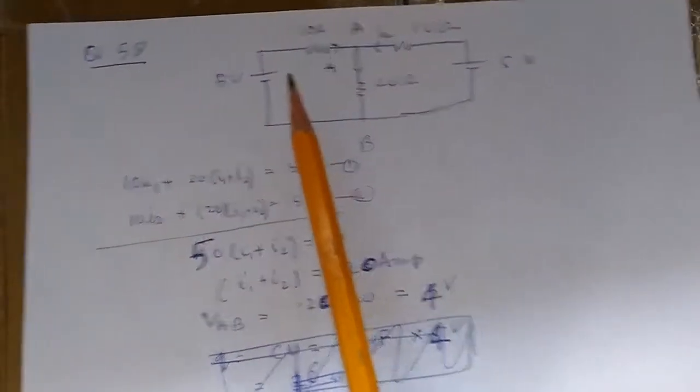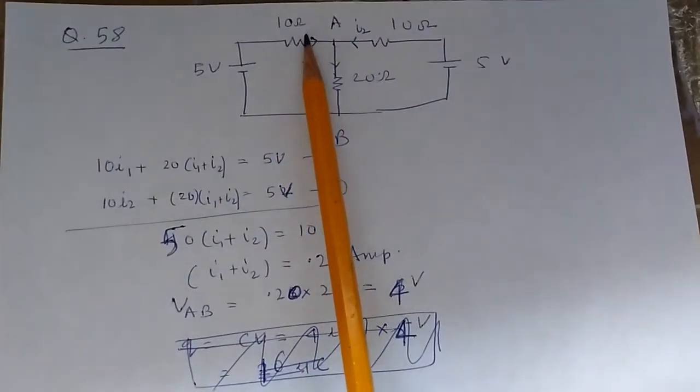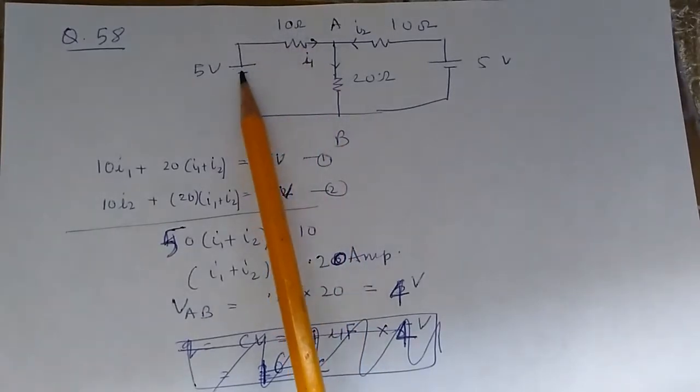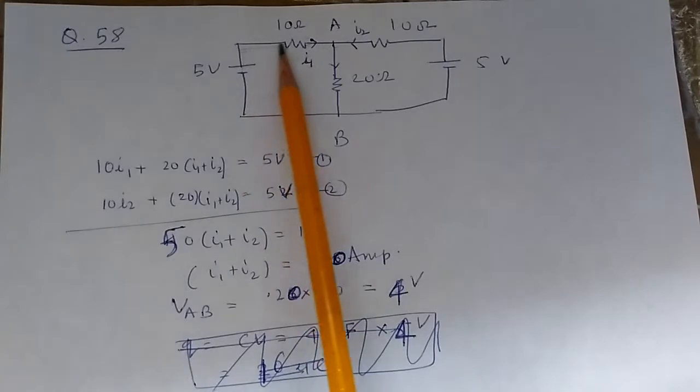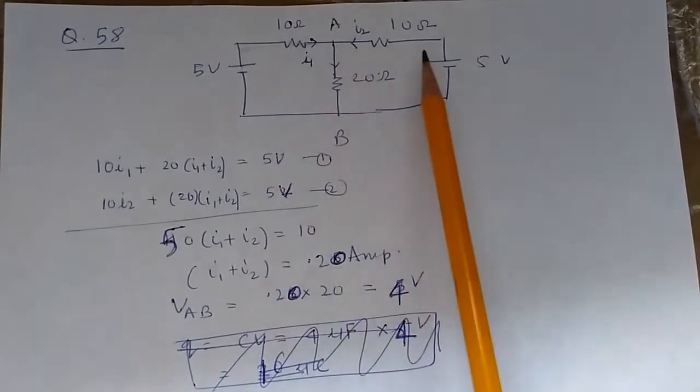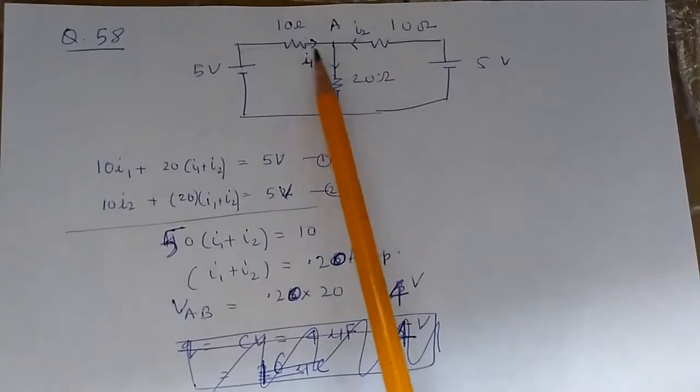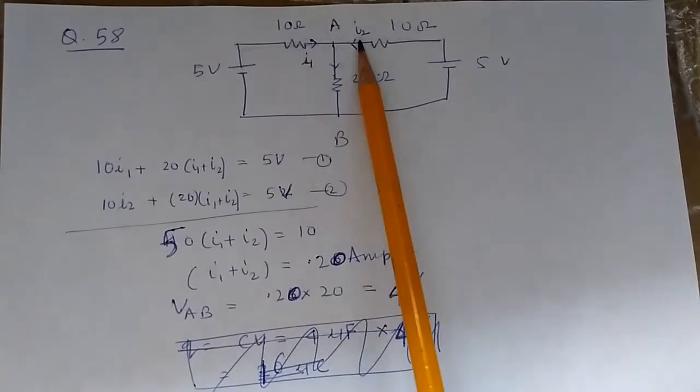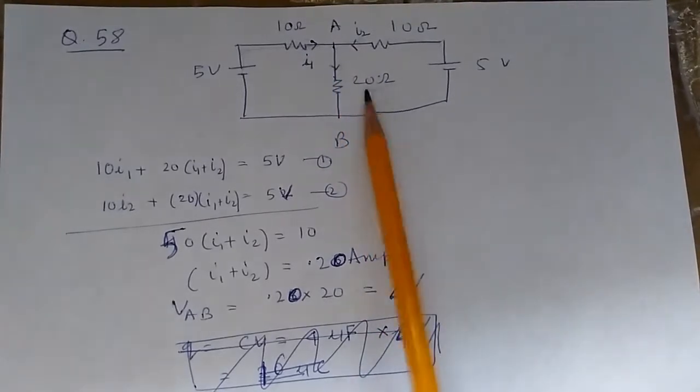It should be simple. All we need to do is apply Kirchhoff's law. Let's say this current is I1 flowing from the battery, and the current in this direction is I2. The current in this resistor will be the sum of these two, so I1 plus I2 will flow through it.